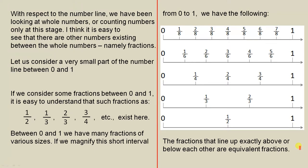The fractions that line up exactly above or below each other are equivalent fractions — that is very important to understand. For example, a half is an equivalent fraction to two on four. It is equivalent to three on six. It is equivalent to four on eight. That is what we mean by this.